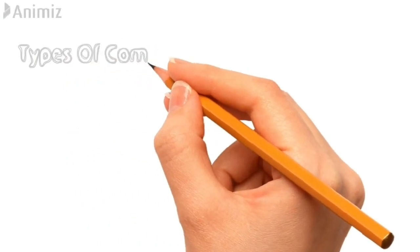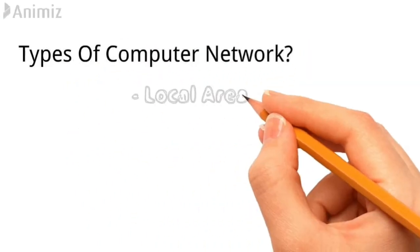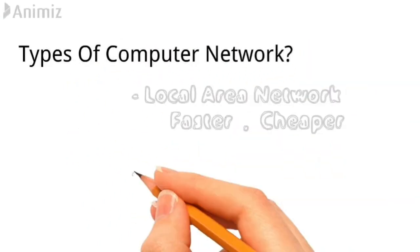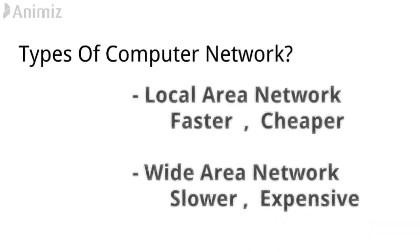Okay guys, types of computer networks are two main types: Local Area Network and Wide Area Network. Local Area Network is faster and cheaper — the communication between systems can be transmitted faster and at a lower price. But Wide Area Network is very slow and the cost is very expensive.